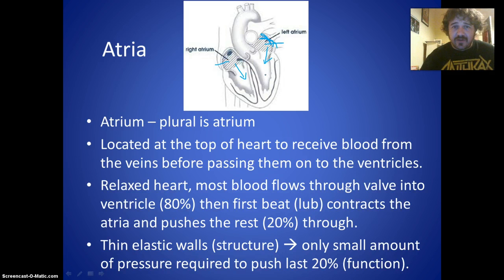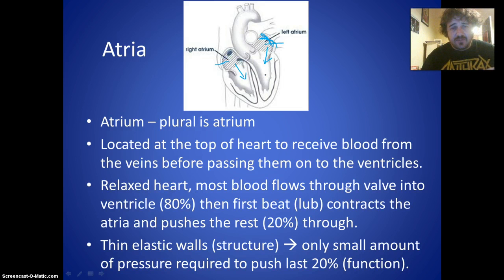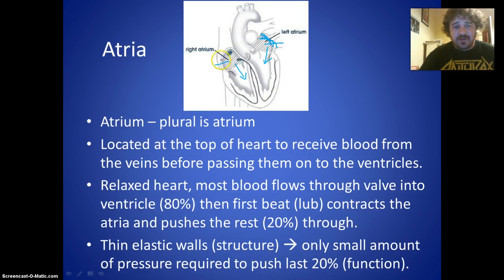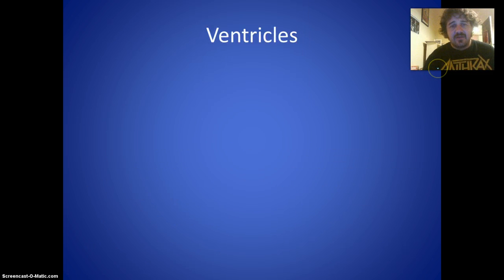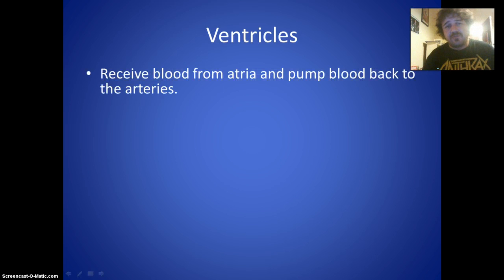Relating structure and function: the atria have thin, elastic walls — that's the structure. The function is that they only need to push a small amount of blood, so they only need a small amount of pressure. Thin walls, thin muscle means only a small pressure is required. If you compare the atrial walls to the ventricular walls you'll see a massive difference.